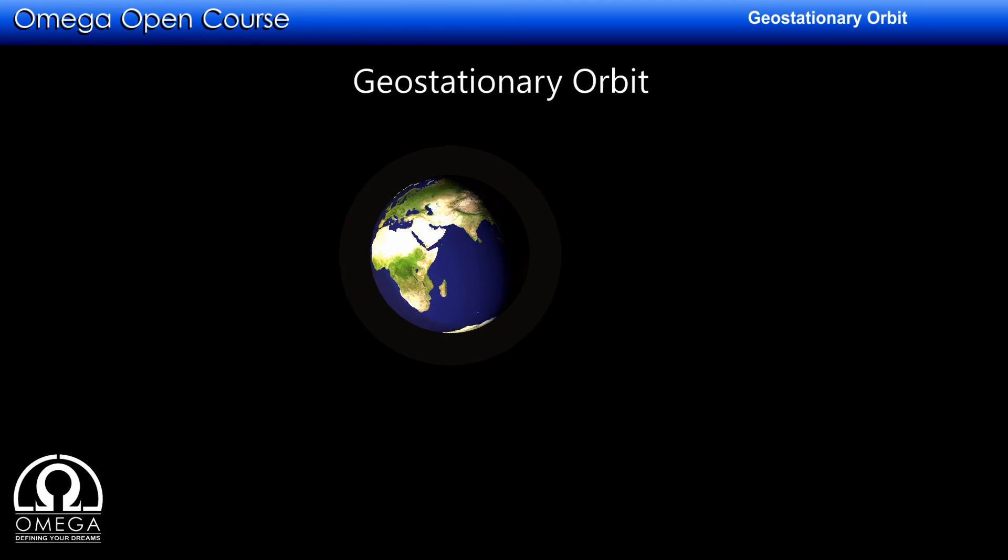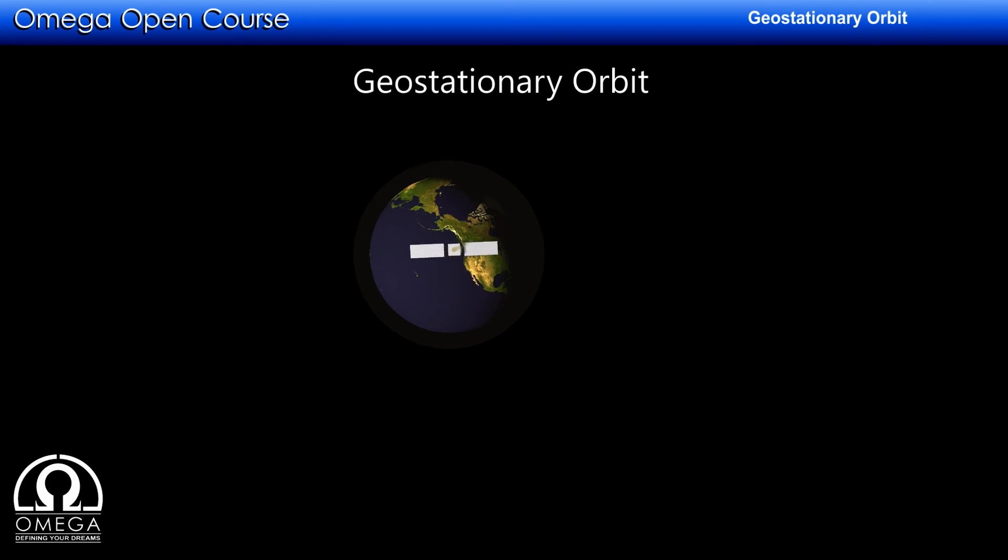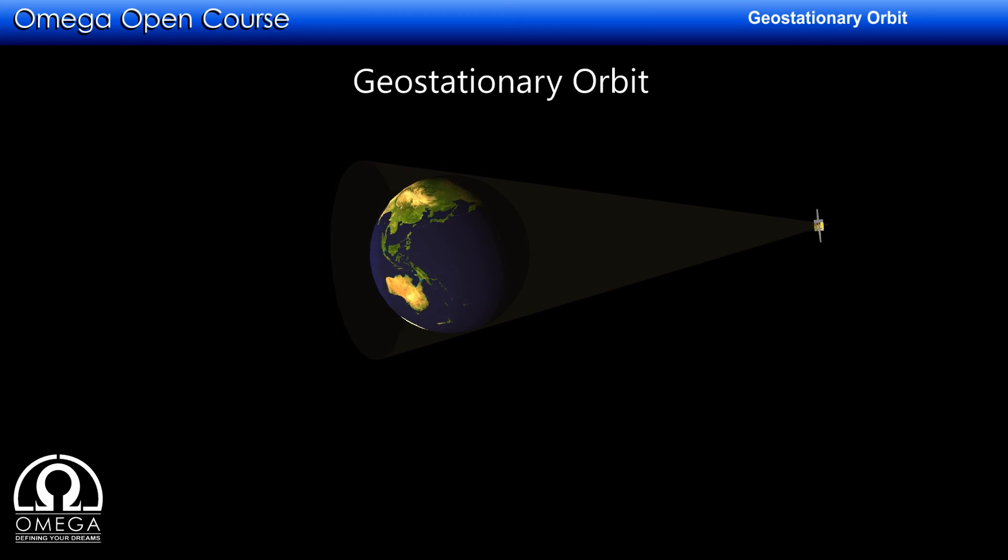Thus, a geostationary satellite can send signal up to the point that makes 8.76 degrees with the poles or 81.26 degrees north and south latitudes.